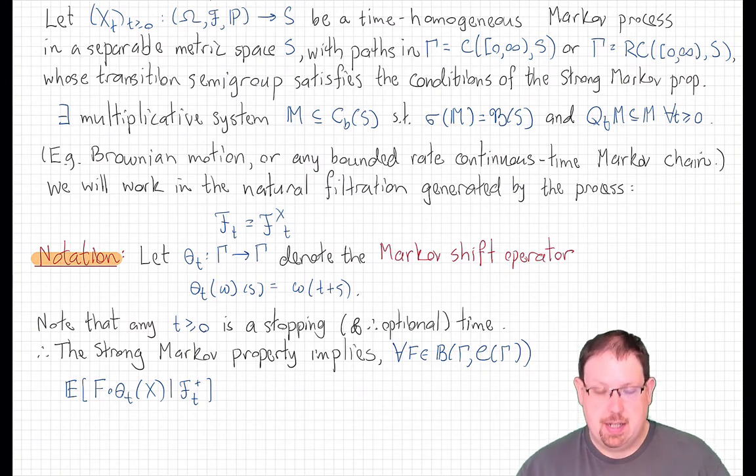We'll make this technical assumption on the regularity of the Markov transition semigroup. We know that all of the processes that we've studied so far in this year-long course have this property—Brownian motion, bounded-rate continuous-time Markov chains, like for example Poisson process. All of these are so-called strong Markov processes.